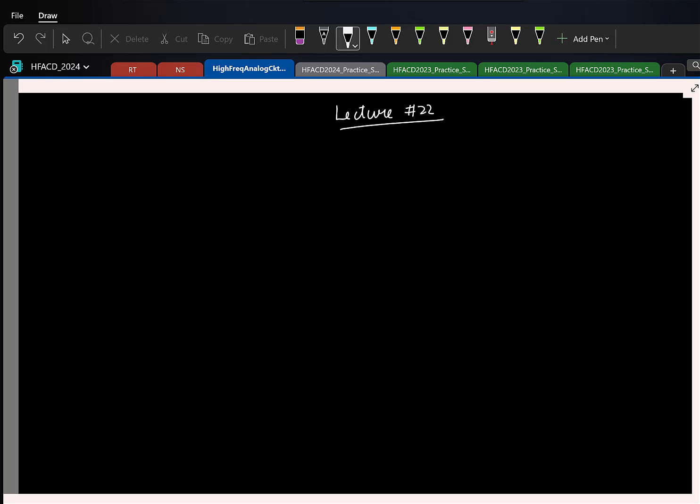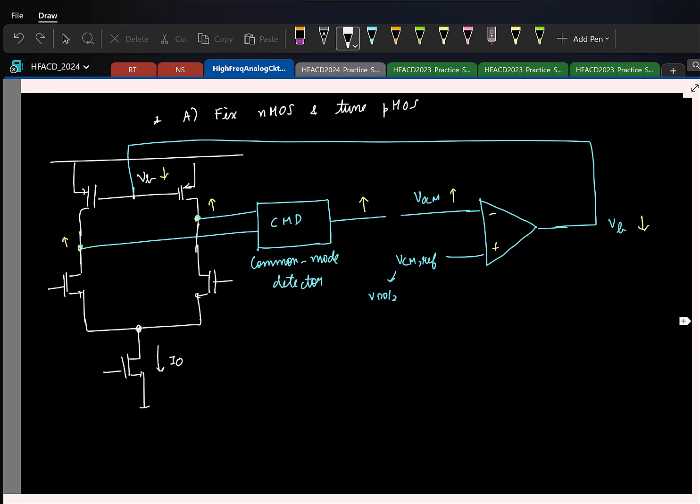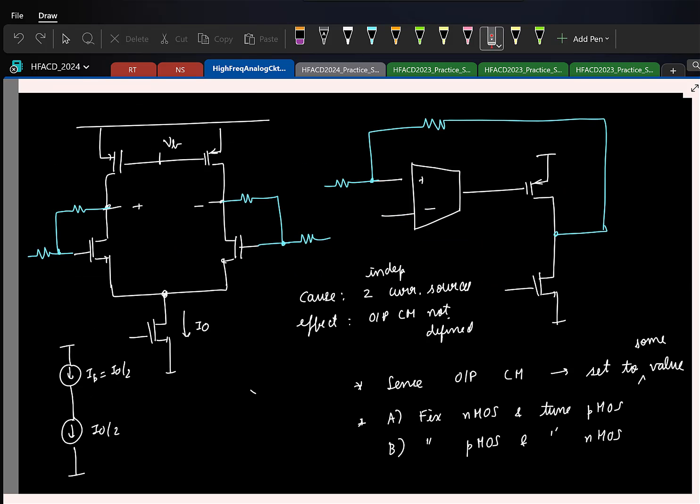Okay, let us continue. We have been looking at the fully differential op amp and in the last class we essentially saw that for this fully differential op amp the global feedback we have will set the difference of the outputs, but for setting the common mode or the average we need a separate feedback and that was the common mode feedback. The problem was happening because we had two current sources biased independently.